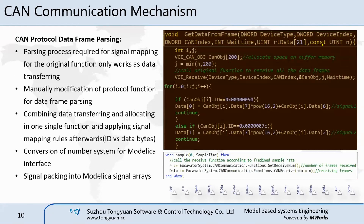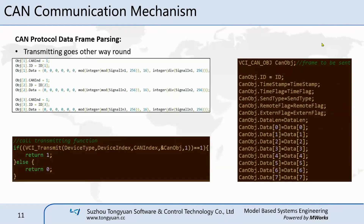Directly using the original function only moves a certain number of frames from the device. To filter the frames and collect what the models need, the function is modified and combined with a data parsing loop. The original function collects as many frames as possible in every single call first, then uses a for loop to pick the desired frame according to its ID. Since the number system is different between the CAN network and Modelica, number conversion is added here. The final function outputs a data array in the Modelica environment and will be repacked into signal interfaces. For transmitting, the function procedure goes the other way around — the feedback signals are converted in the Modelica model first and then transmitted by external function to the network.